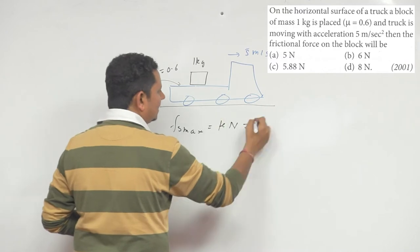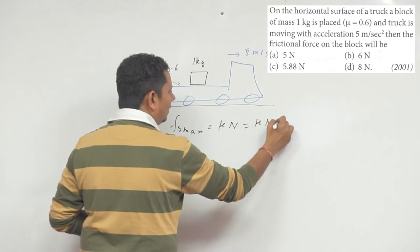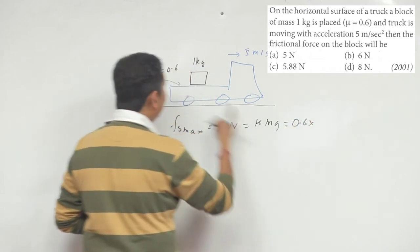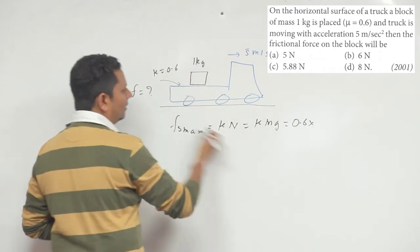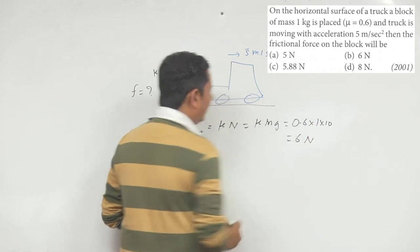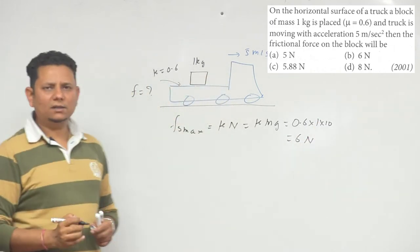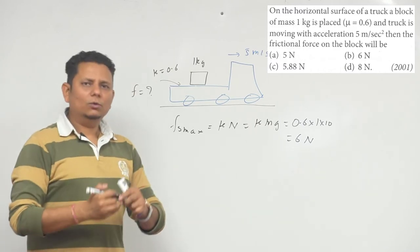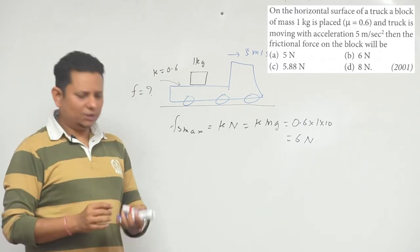In this case it will be μmg. The value of μ you've given is 0.6 multiplied by m is 1, multiplied by g is 10, so this becomes 6 newton. This means the maximum static friction force that can be applied is 6 newton. More than that friction force is not possible here.